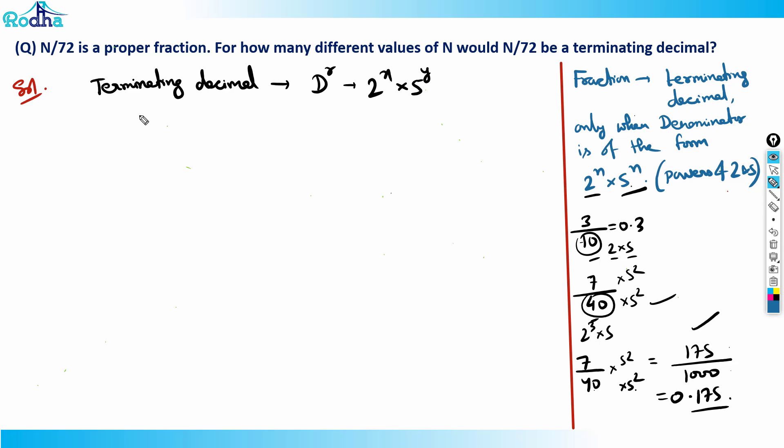So now, what is 72? If I observe, N/72, so 72 is 2³ × 3².